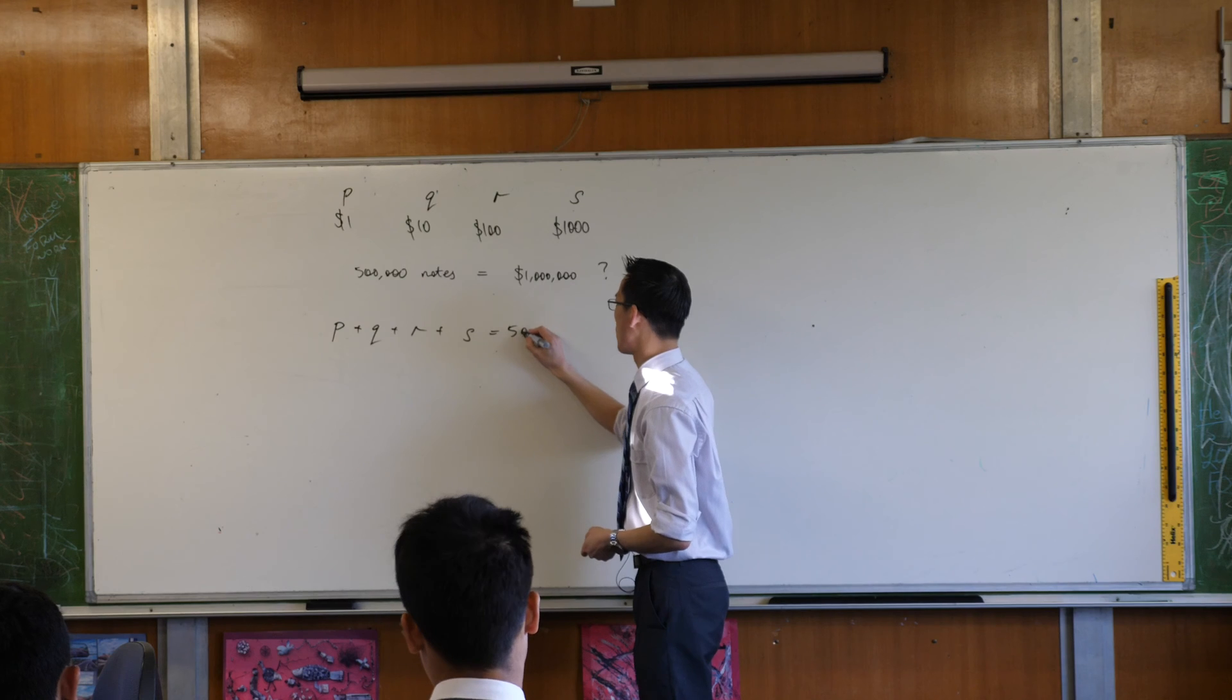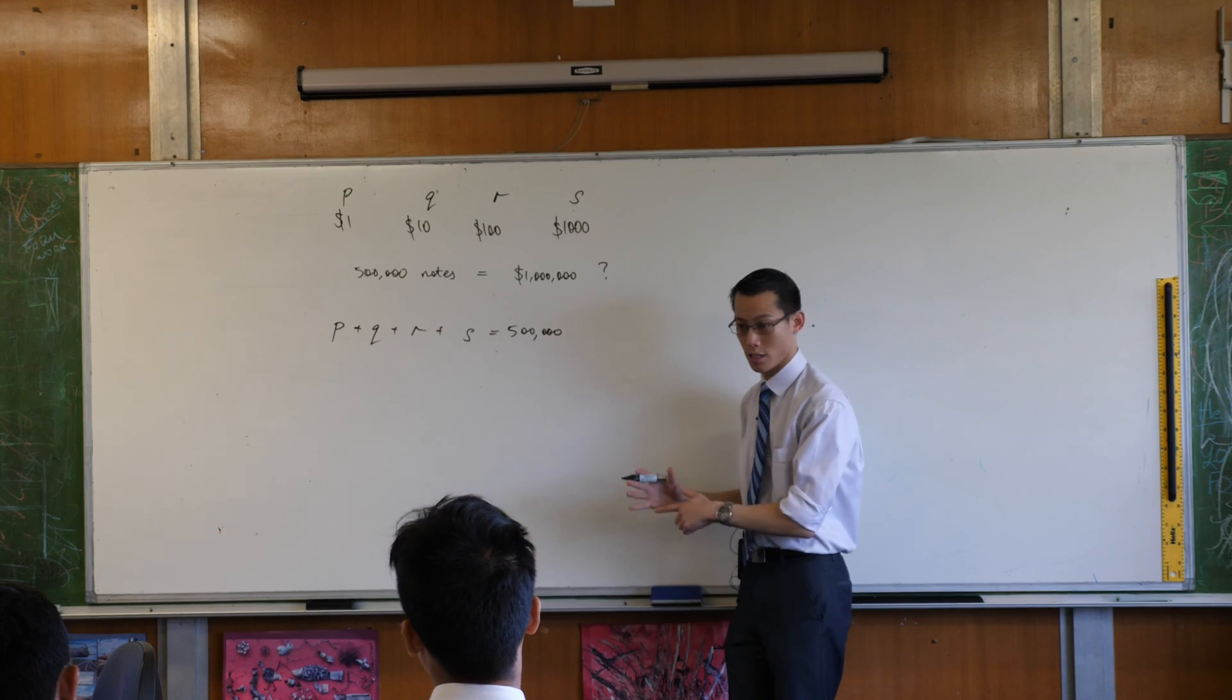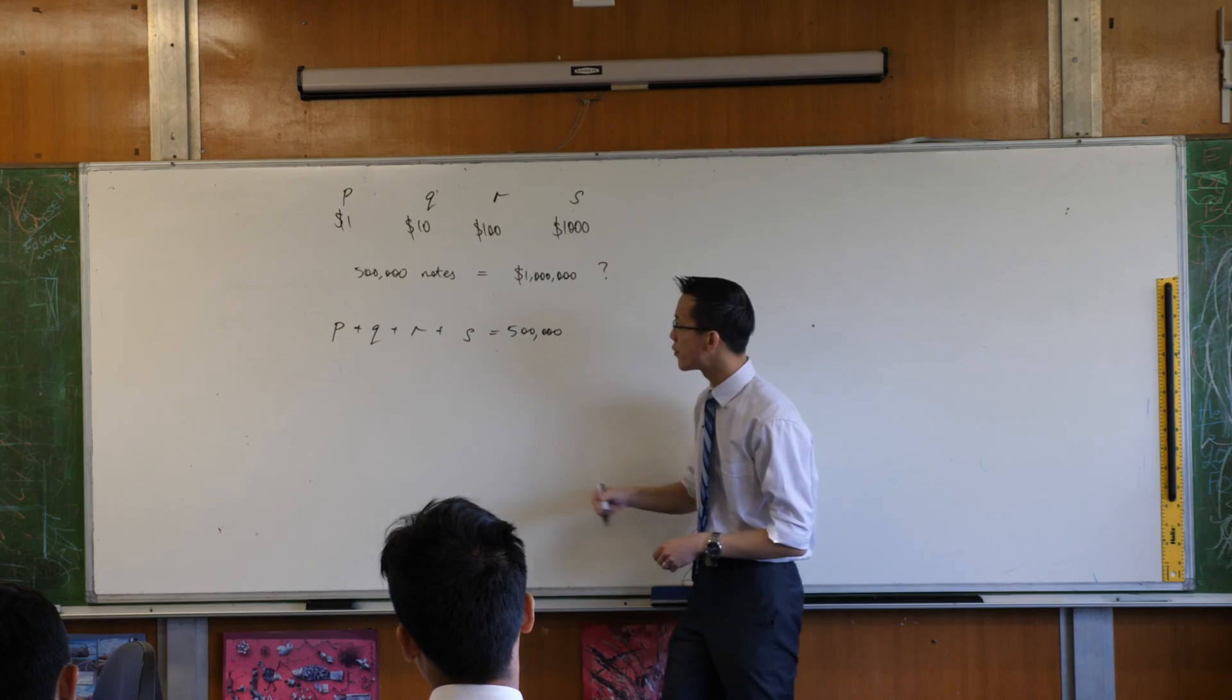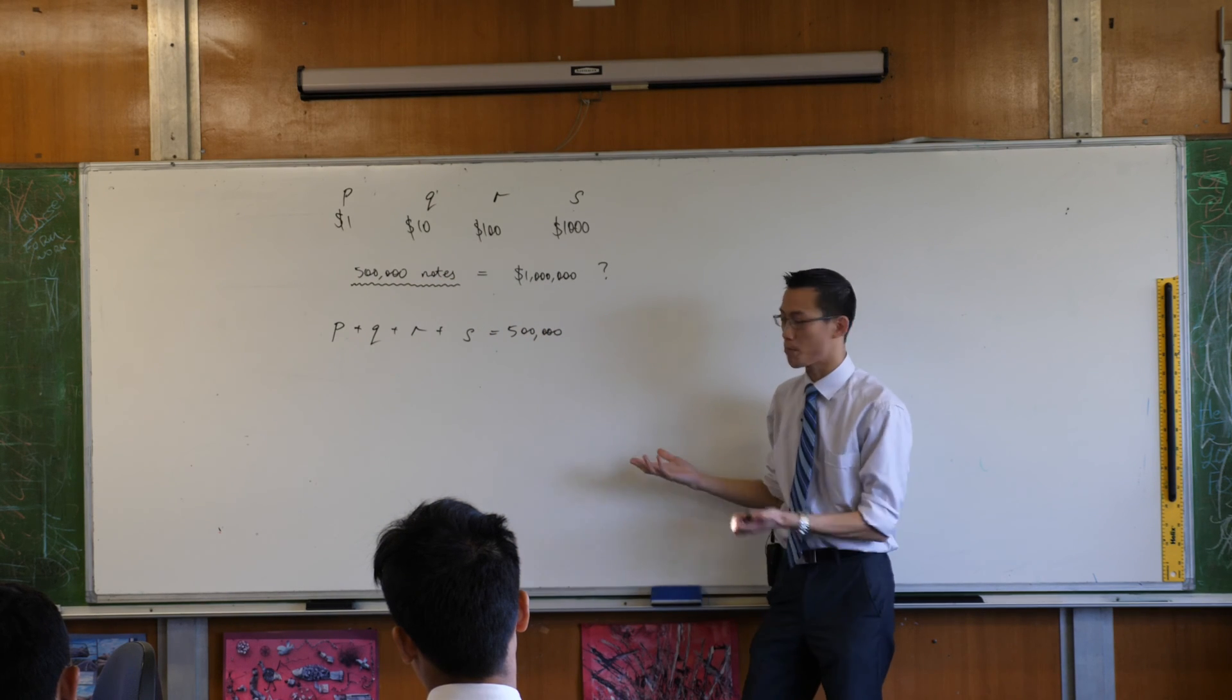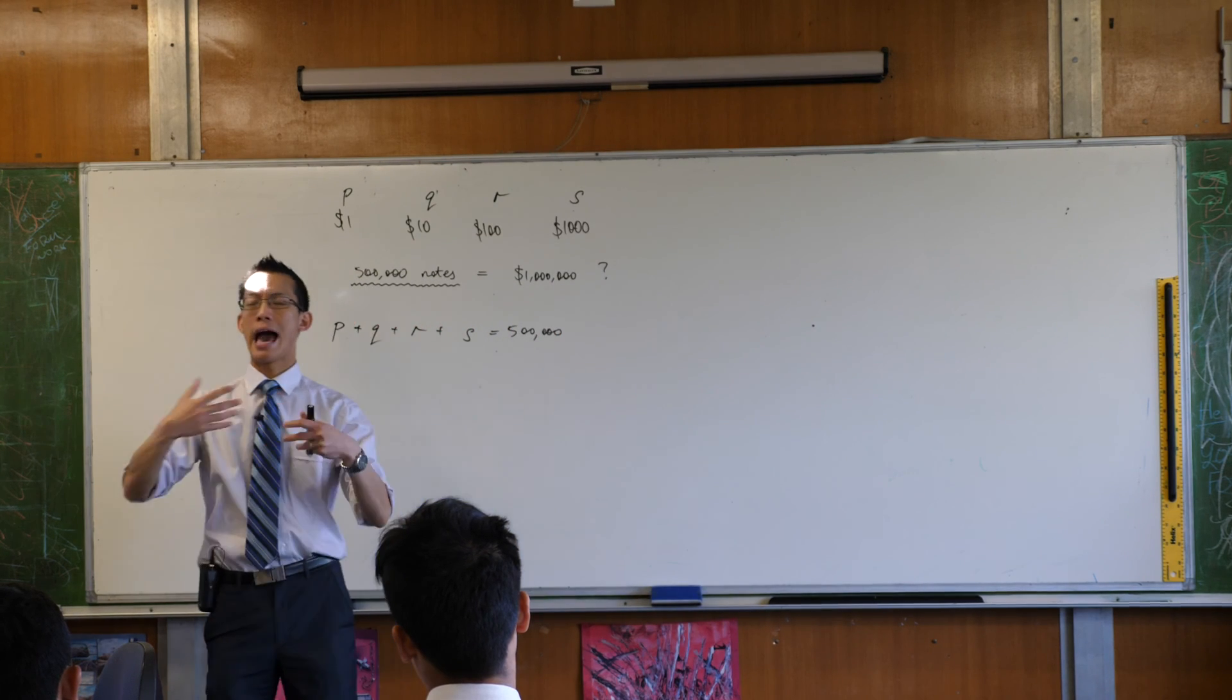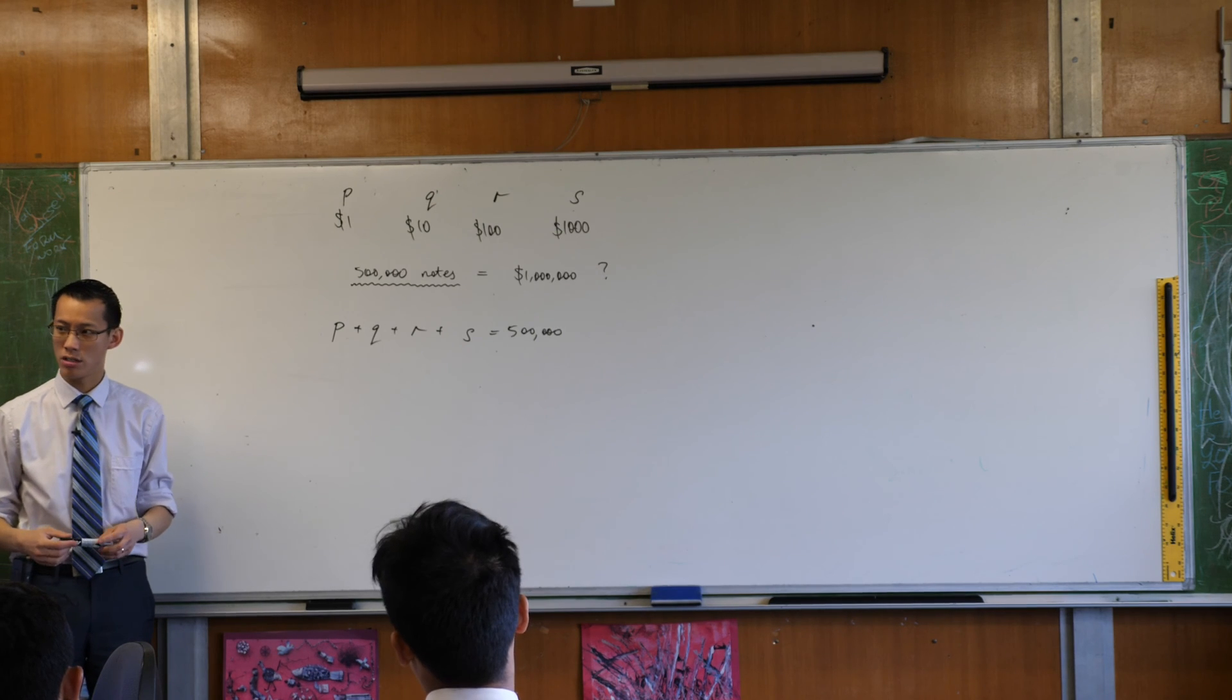So if I add these all together, then I should get 500,000. So this is a start. This is good. This is progress. I want you to look at the question now. I've taken into account this piece of information. Have a look at what else we know, because this is pretty much it. What other information have I got in the question that I have not taken into account that I could form into an equation? Any suggestions?